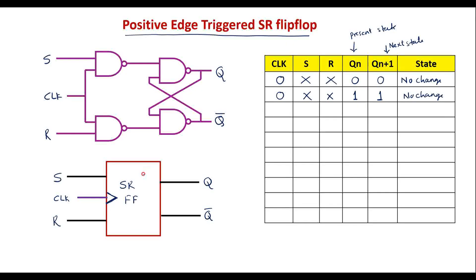The positive edge-triggered flip-flop will work only at the positive edges of the clock, represented by an arrow mark indicating the rising edge. At positive edges of the clock, the flip-flop is active. If S is 0 and R is 0, the next state of the flip-flop is the same as the present state — there is no change. So if present state is 0, next state is 0; if present state is 1, next state is 1.